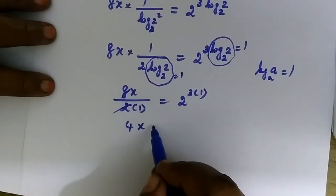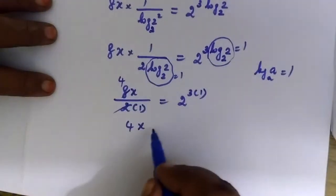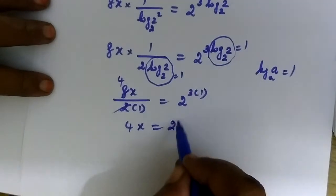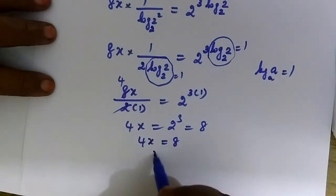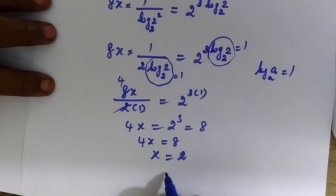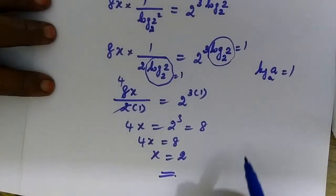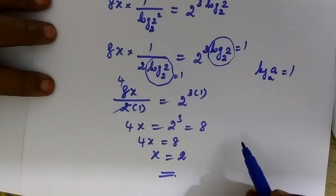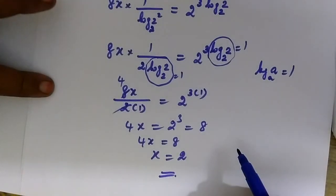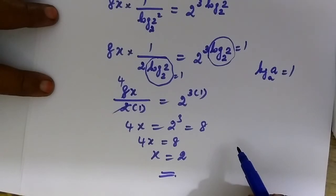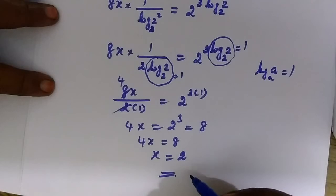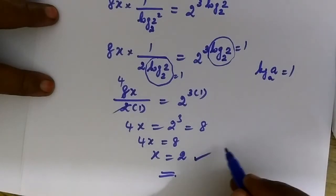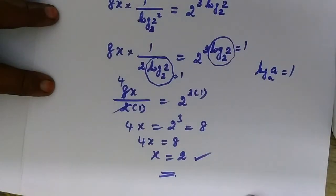So 4x — given the 4, so 2 cubed. 2 cube is nothing but 8. Therefore 4x equal to 8, so x equal to 2. This is the answer for this problem. The video is Part 2, Question number 4. Since the question was wrong, the answer was redone. This is the correct one. Thank you.